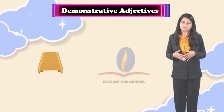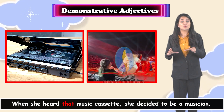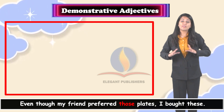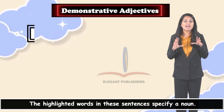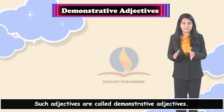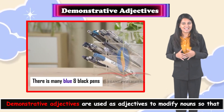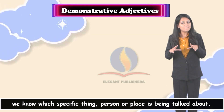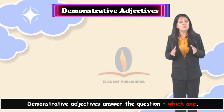Demonstrative adjectives. Let us read more sentences. When she heard that music cassette, she decided to be a musician. This apartment needs to be renovated. Even though my friend preferred those plates, I bought these. The highlighted words in these sentences specify a noun. Such adjectives are called demonstrative adjectives. They are used to modify nouns so that we know which specific thing, person, or place is being talked about. Demonstrative adjectives answer the question 'which one.'